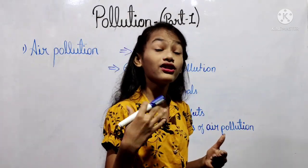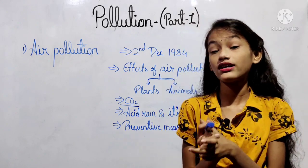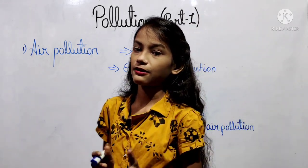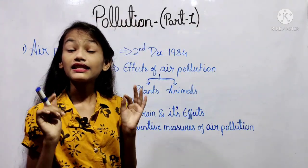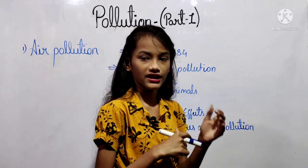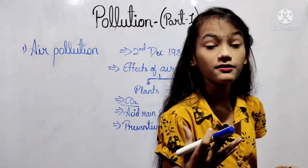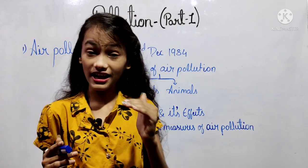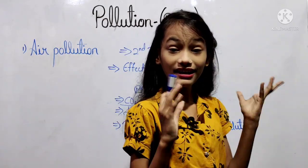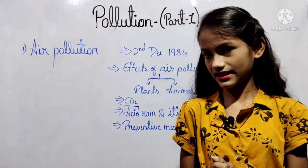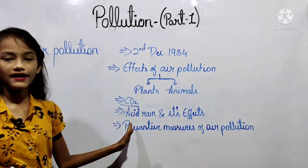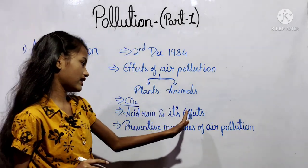Global temperature is gradually increasing due to the greenhouse effect. This causes disturbances in agriculture, changes in the distribution of wild animals, and melting of icebergs and glaciers, which in turn causes an increase in sea level.